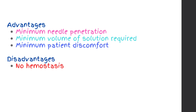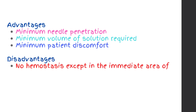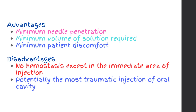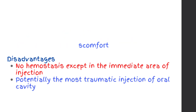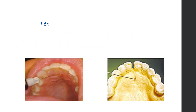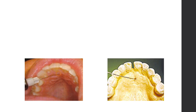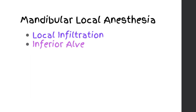Disadvantages: no hemostasis except in the immediate area of injection; potentially the most traumatic injection of the oral cavity. Technique: 27 gauge needle. Target area is the incisive foramen beneath the incisive papilla.